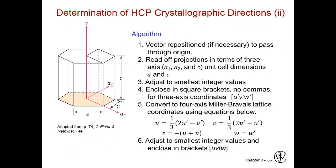Well, we can also make this into a four parameter system if we know the three parameters already. So if you want to read three parameters and then translate them into the four that we just had, this is what we do. We reposition the vector again to pass through the origin. Then we read off the projections in terms of A1, A2, and Z. We don't worry about the A3 at this point in time. Then we adjust to the smallest integer values. And we enclose them in square brackets with U prime, V prime, and W prime.